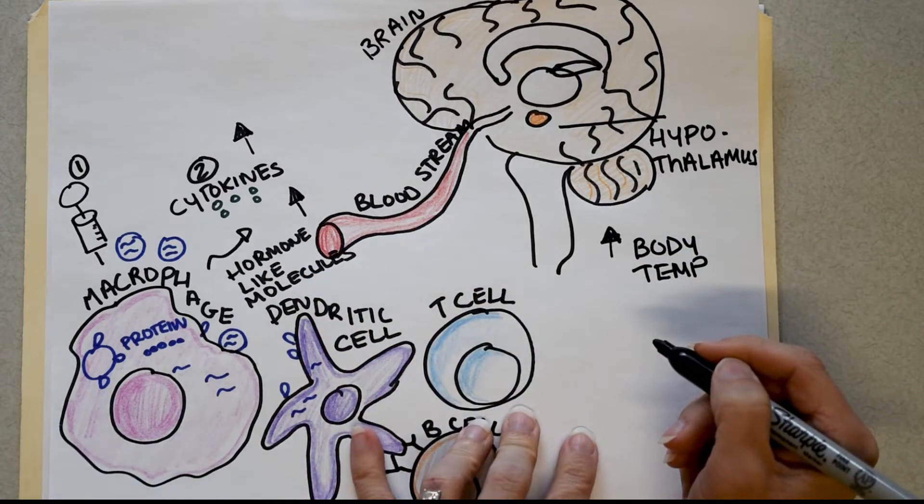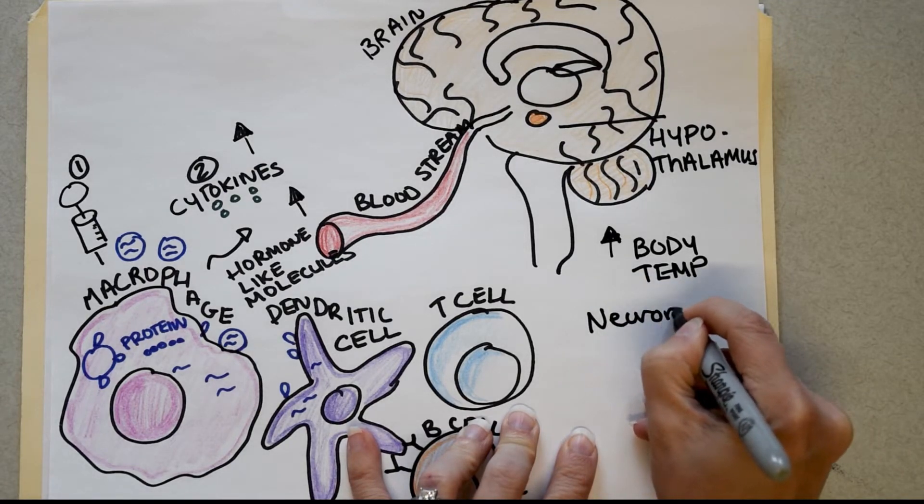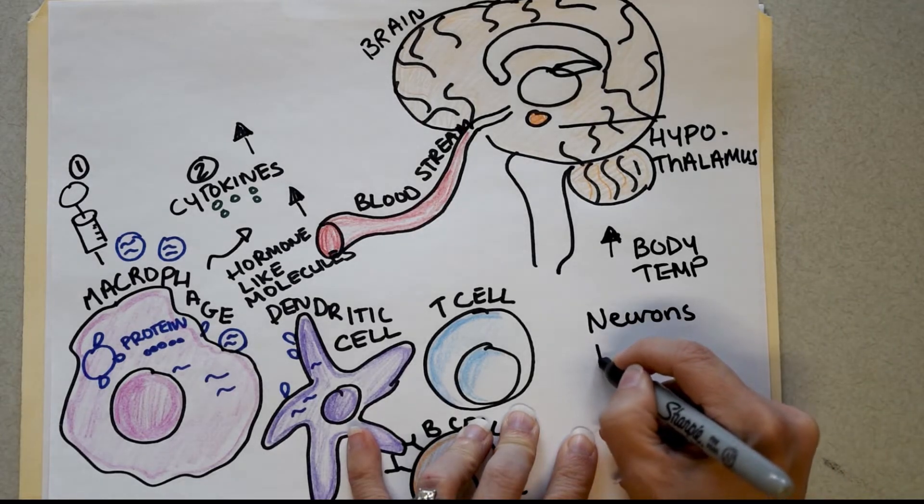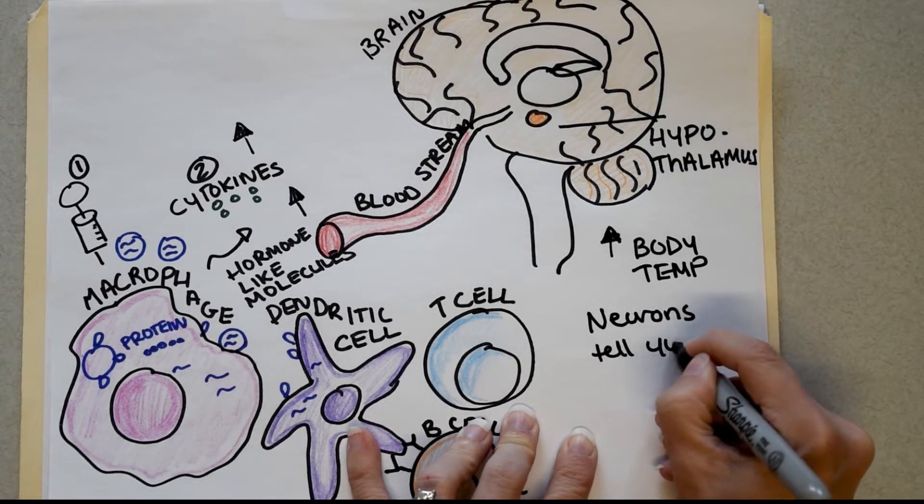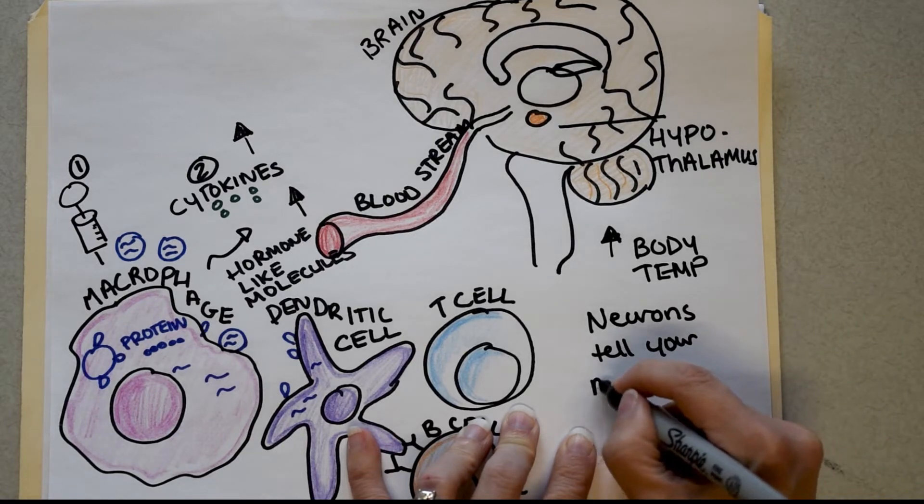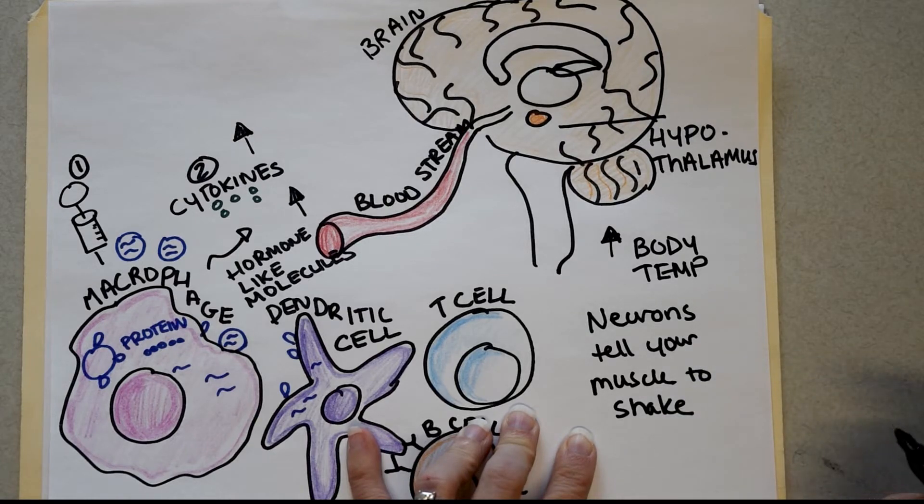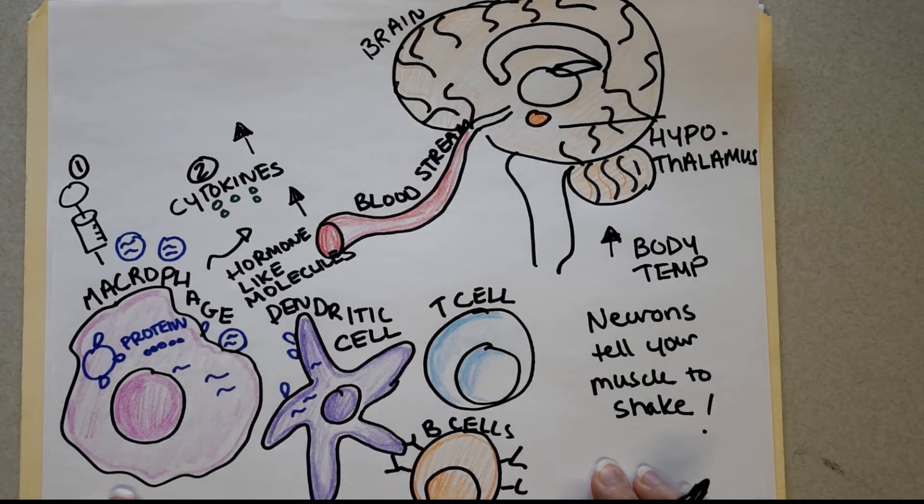Okay. So when you crank up your body temperature, what actually happens is your neurons tell your muscles to shake. And after your muscles have been shaking for several hours, you're definitely going to ache. Neurons tell your muscles to shake and then you're going to get that ache. So now you have a fever, chills, and muscle ache, all because your immune cells have cooperated to tell your hypothalamus to crank up the body temperature. And now I'm going to tell you why that's a really good thing.